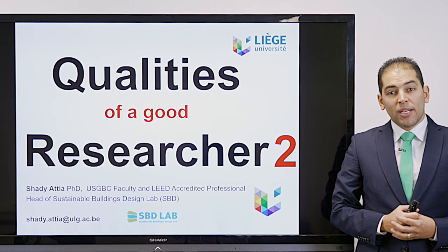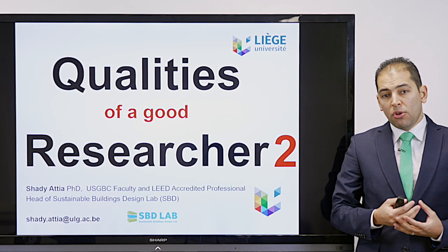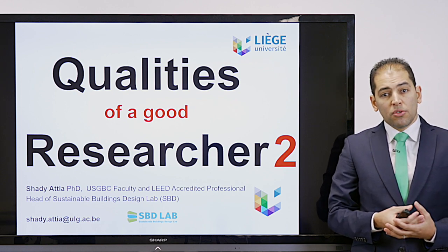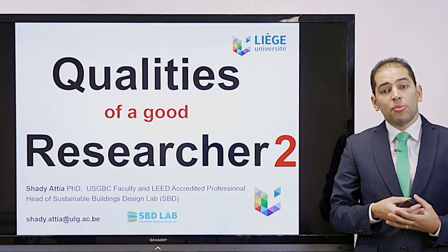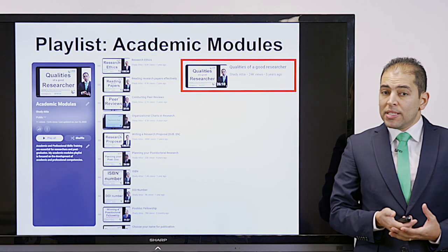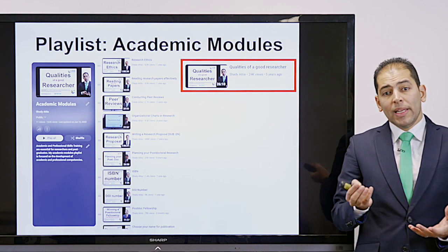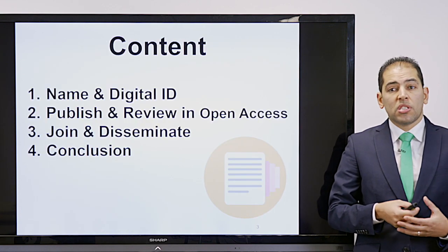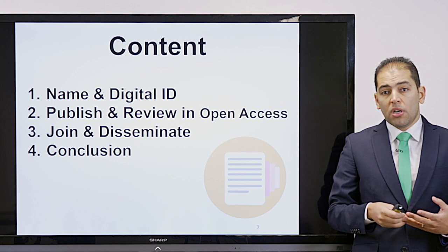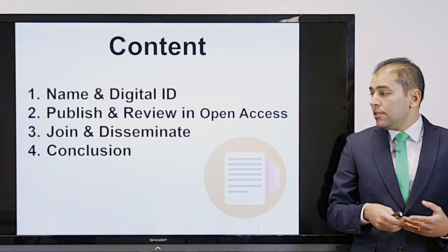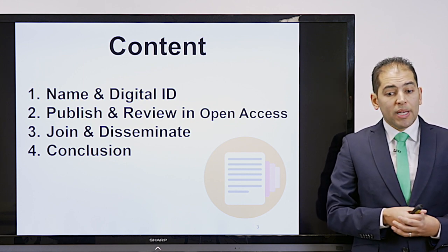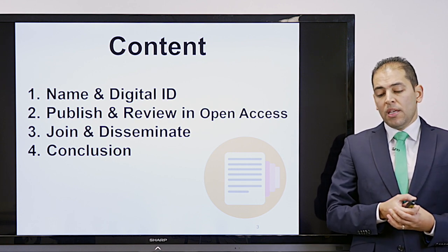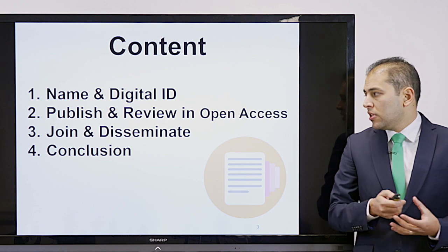Hi, welcome back to my channel. Today's presentation is a follow-up of a previous presentation with the same title called Qualities of a Good Researcher, but today I'm going to elaborate further. The presentation is part of a playlist on academic modules. We are going to discuss how to choose your name, how to promote your digital ID, how to publish and review in open access, how to join communities and disseminate knowledge in your field, and finally some conclusions.